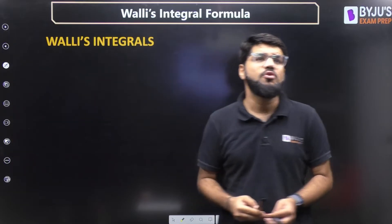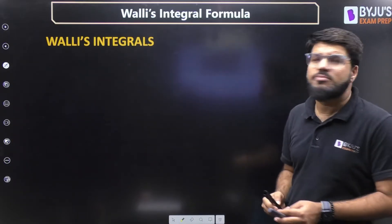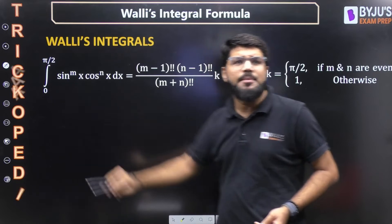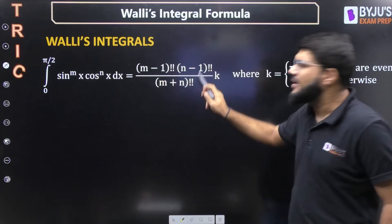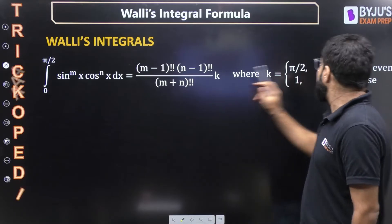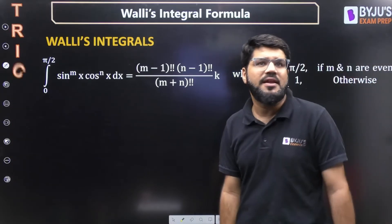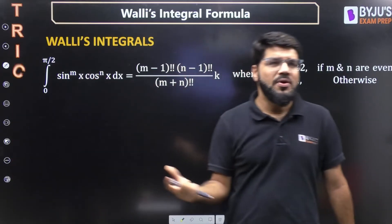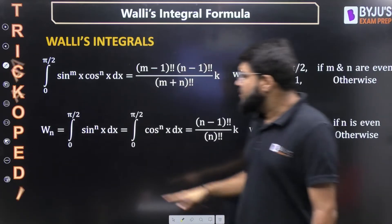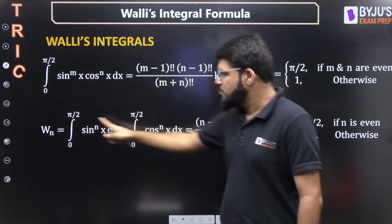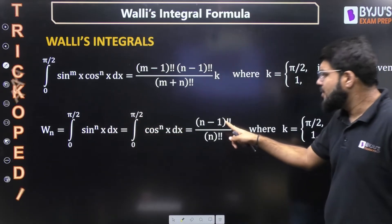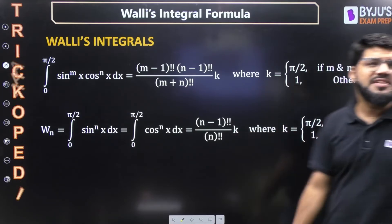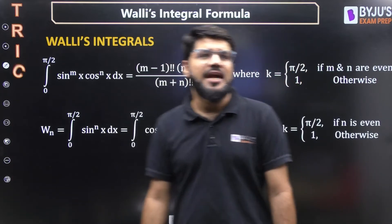In terms of double factorial, Walli's integral formula for the integral from 0 to π/2 of sin^m(x) cos^n(x) dx is: (m−1)!! × (n−1)!! divided by (m+n)!!, multiplied by k. Here k = π/2 if both powers m and n are even; otherwise k = 1. For the individual case — only sin^n(x) or cos^n(x) — the result is (n−1)!! divided by n!!, multiplied by k, where k = π/2 if n is even, otherwise k = 1.